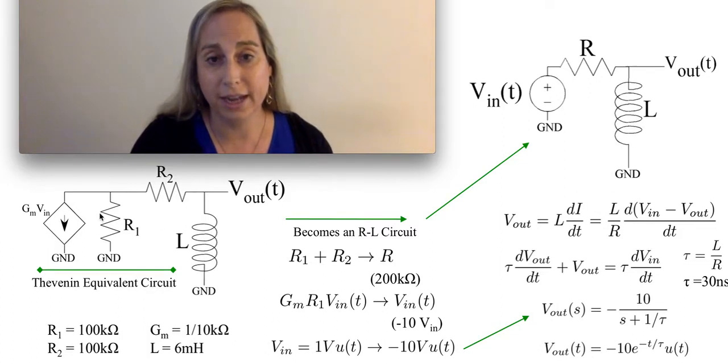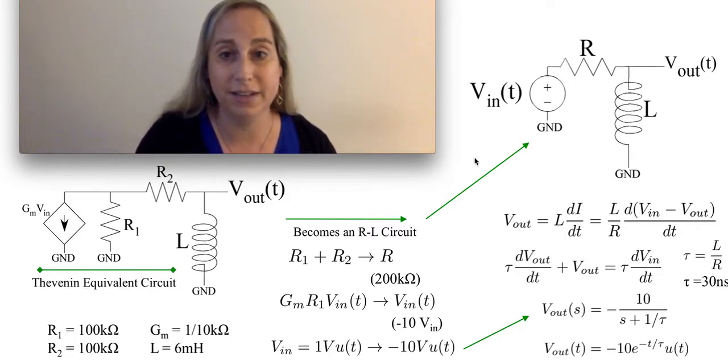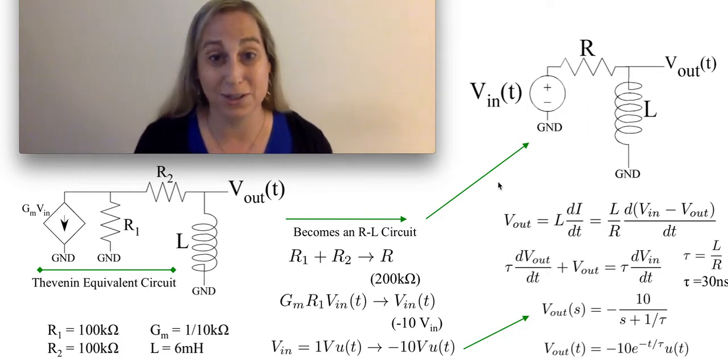I end up saying that I get an equivalent voltage source from looking at this part of the structure. And that turns out to be about 10 VN. Now, I have made this VN and this VN, so it may be a little bit ambiguous. Sorry about that. But that is kind of what's going on there.